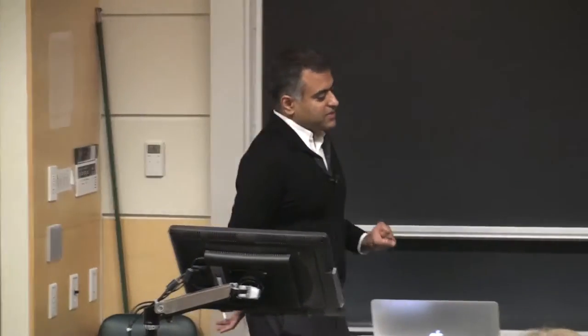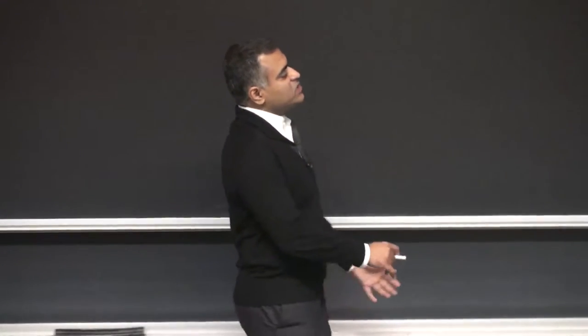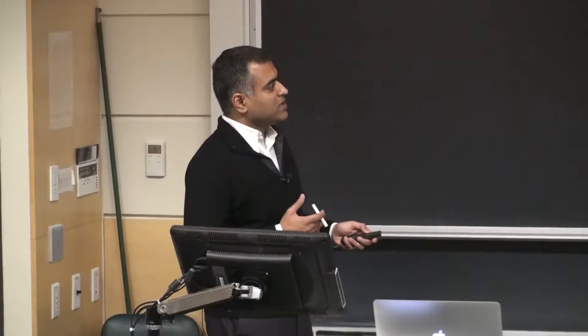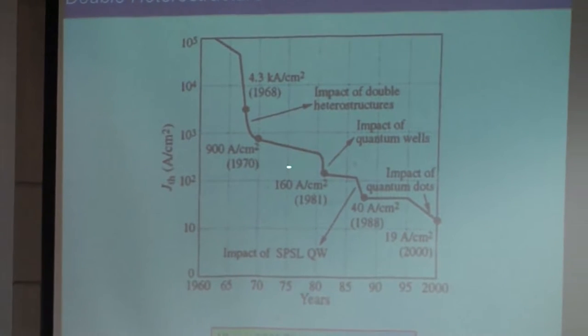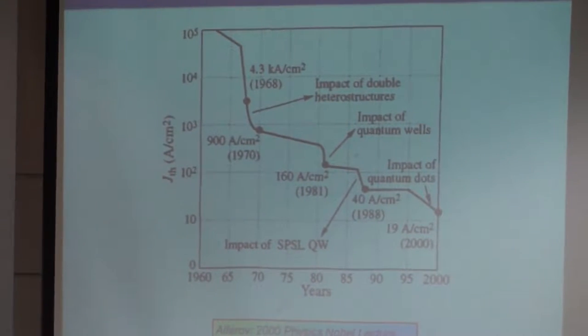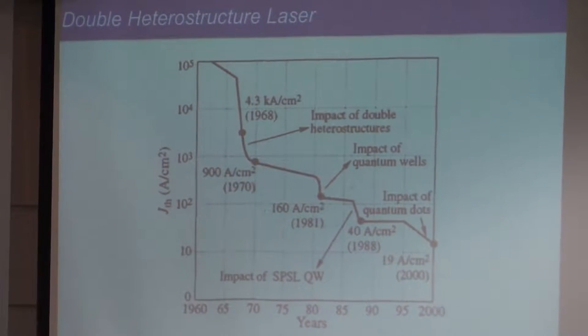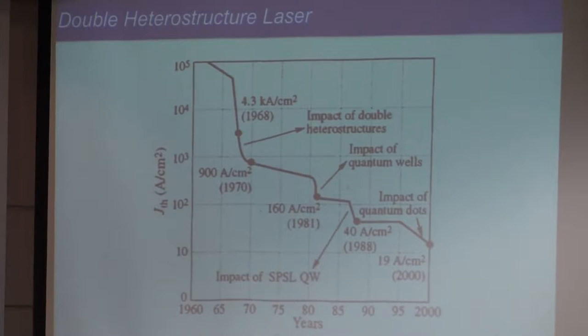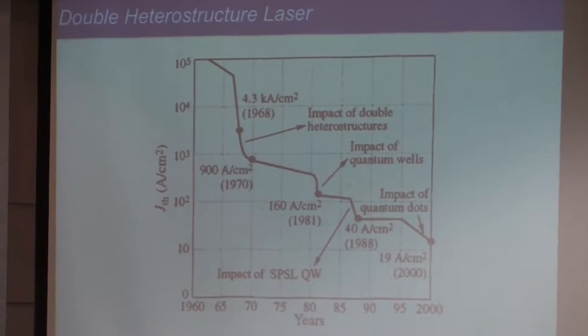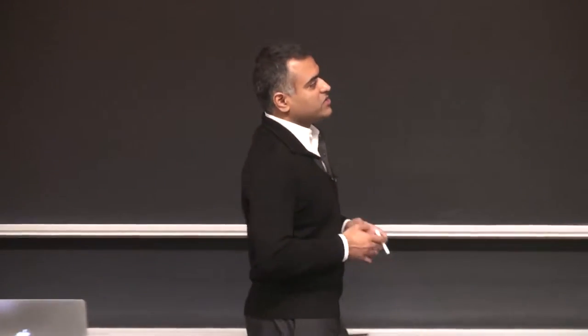We were motivating in the last class what's the need to go from bulk three-dimensional semiconductor diode lasers to double heterostructure lasers, and then to quantized structures — quantum wells with 2D confinement, or wires and dots. One of the real motivations is to lower the amount of current you need to inject to make it lase, to have stimulated emission and gain overcome loss. The lower the current, the easier it is to miniaturize, make it mobile, and integrate it on chips.